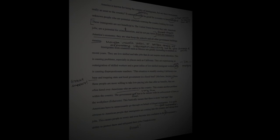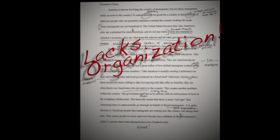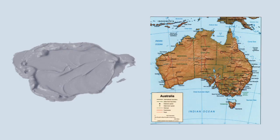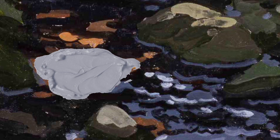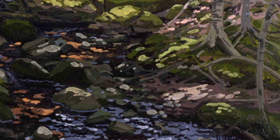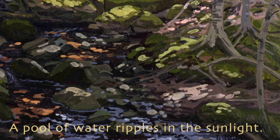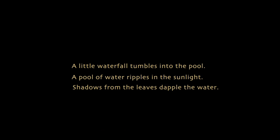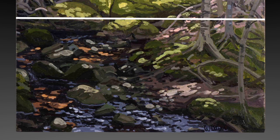A common teacher remark on students' papers is 'lacks organization.' How can we learn good organization in writing from the work of a painter? A dab of paint doesn't necessarily mean much on its own. We now know that a glint of sunlight in a pool of water is part of a group of brushstrokes joined together to describe one complete idea: 'A pool of water ripples in the sunlight' — a picture sentence. Here's another: 'A little waterfall tumbles into the pool.' We group sentences into paragraphs because they all describe a bigger idea. A painter's paragraph is one shape that our eyes read as a continuous element — a stream.